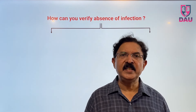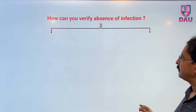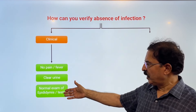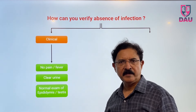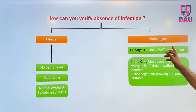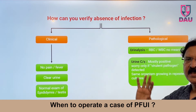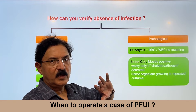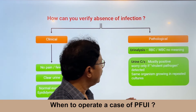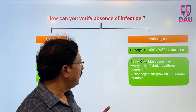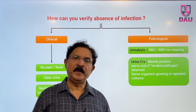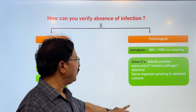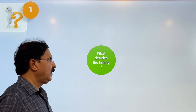When you are ready to operate, how do you verify the absence of infection? Clinically, if there is no pain or fever, urine is clear, and examination shows normal epididymis and testis, that is reassuring. On urinalysis, some RBCs and WBCs will always be present due to the suprapubic catheter — do not worry about those. For catheter-associated urinary infection, you need a virulent pathogen growing in repeated cultures; only then treat with antibiotics. Low-count bacteriuria need not be treated.